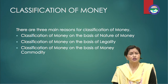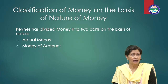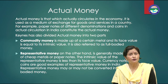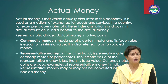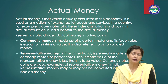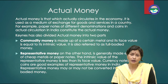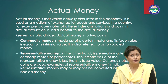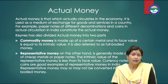The more important classification of money are as follows, according to Keynes. Number one: actual money and money of account. Actual money is that which actually circulates in the economy. It is used as a medium of exchange for goods and services in a country. For example, paper notes of different denominations and coins in actual circulation in India constitute the actual money. Money of account is that form of money in terms of which the accounts of a country are maintained and transactions meet. For example, rupee is the money of account in India.